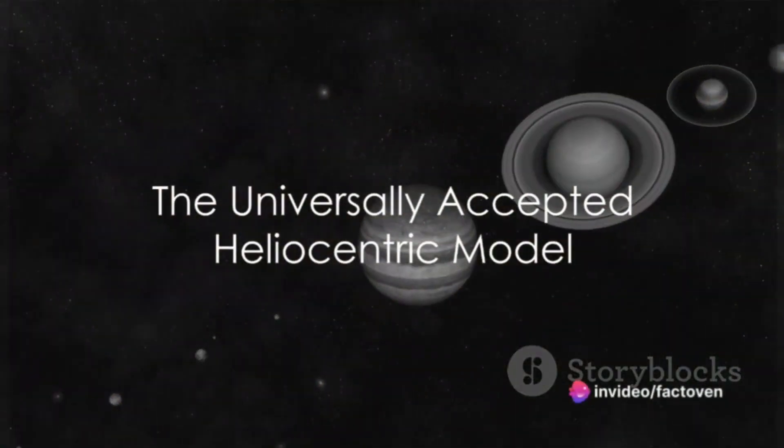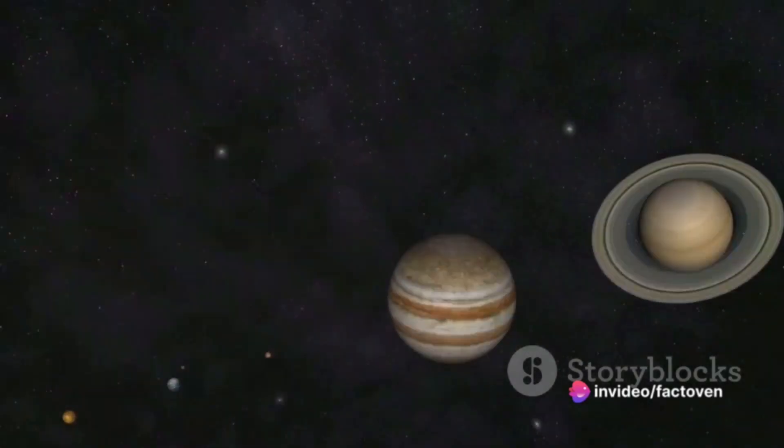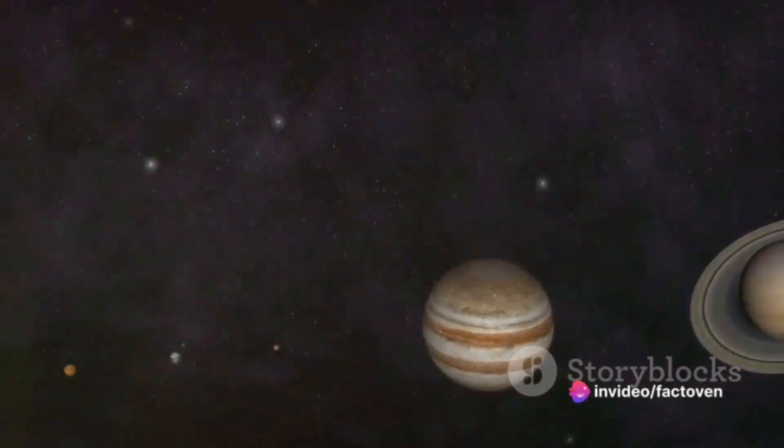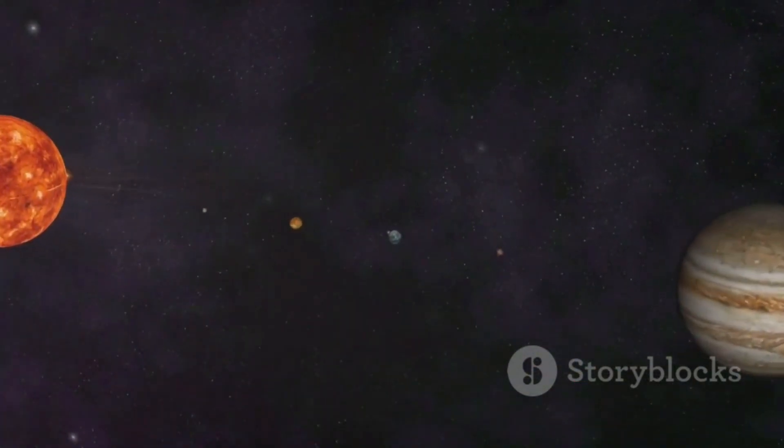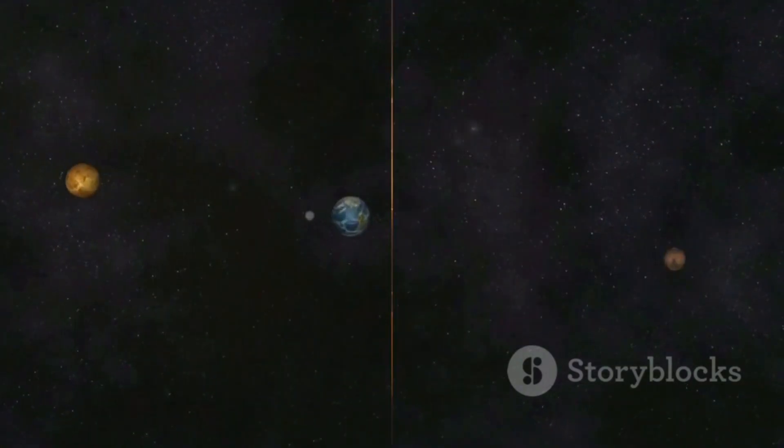Fast forward to today, and the heliocentric model is universally accepted. The Sun, being the most massive object in the solar system, exerts a strong gravitational pull that keeps the planets, including Earth, in their orbits.